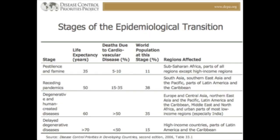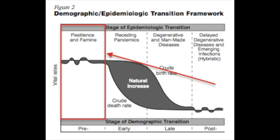Stage one is pestilence and famine. This is where infectious diseases and animal attacks and parasites killed off humans. Thomas Malthus looked at this as basically a natural check, and it matches into stage one of the demographic transition model where we have high births and high deaths.